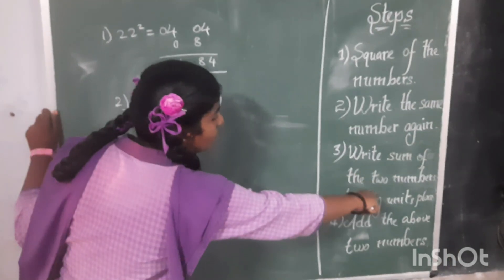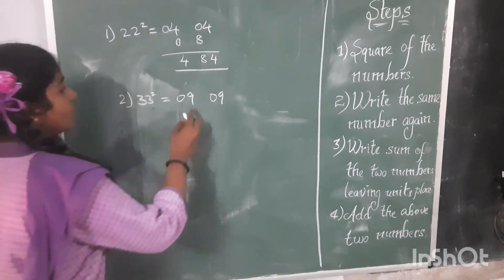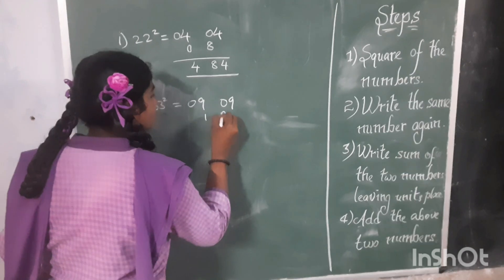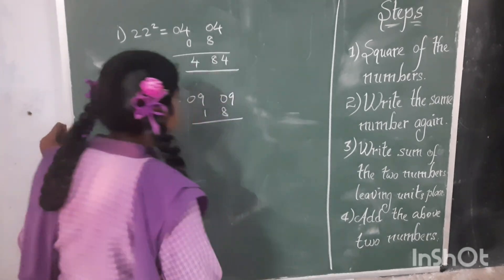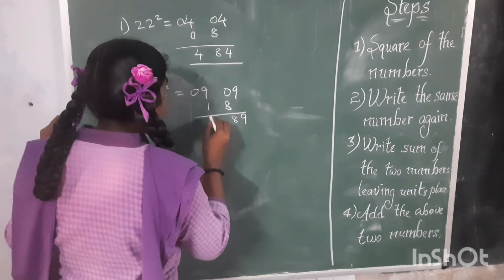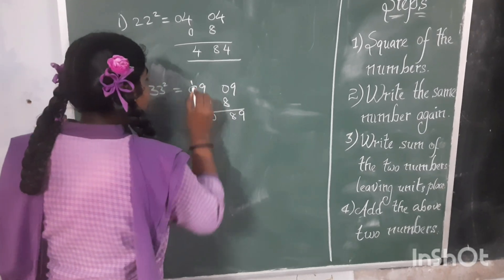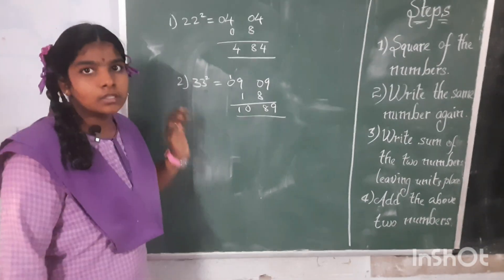Third step, write the sum of the two numbers leaving in its place. 9 plus 9 is 18. Fourth step, write the sum of the number again. 9 plus 8 is 8. 9 plus 1 is 10. 0 plus 1 is 1. 33 square is equal to 1089. Let's see third example.